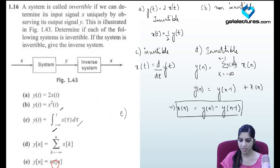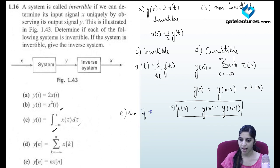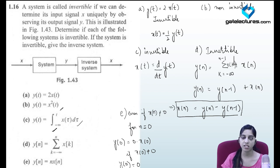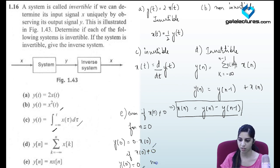Last part: y[n] = n·x[n]. This system is non-invertible. Even if x[0] ≠ 0, y[0] = 0·x[0] = 0. A non-zero input produces a zero output, violating the second invertibility condition. There are two conditions: different inputs must not yield the same output, and a non-zero input must not yield zero output. Here the second condition is violated, so the system is non-invertible.